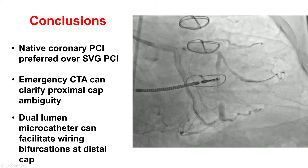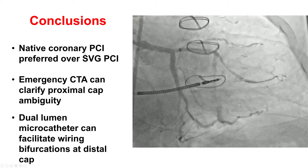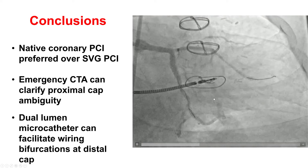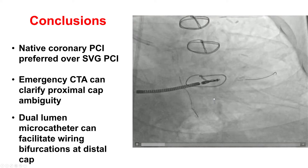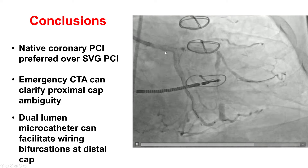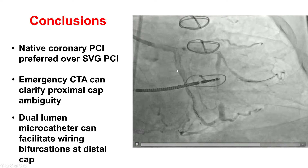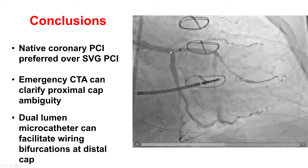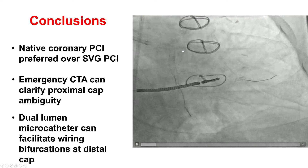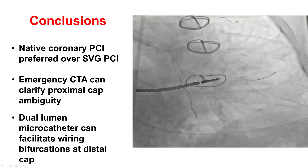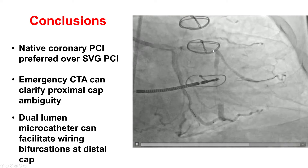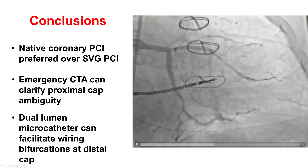Several lessons from this case: First, opening the native coronary artery can be preferred over doing the saphenous vein graft intervention, especially in a case like this where the SVG could not be safely re-canalized. Second, CTA can help resolve proximal cap ambiguity — this changed the case from a very complex situation to a much more favorable treatment of a RAMUS CTO with a clear, well-defined proximal cap. Finally, the use of a dual-lumen microcatheter was very useful for advancing the guide wire from the side branch into the main branch at the distal cap of the CTO.